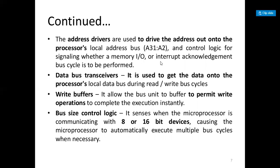The data bus transceiver is used to get the data onto the processor local data bus during read and write bus cycles. The write buffer is used to allow the bus unit to buffer and permit write operations to complete execution instantly. The bus size control is used for communicating with 8 or 16-bit devices, causing the microprocessor to automatically execute multiple bus cycles when necessary.